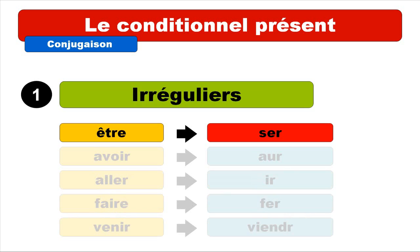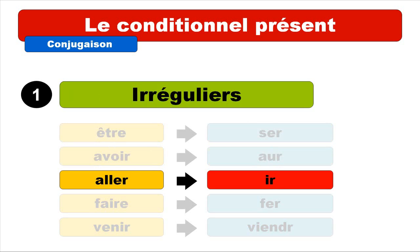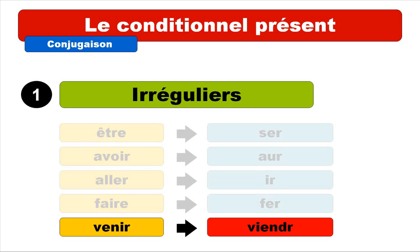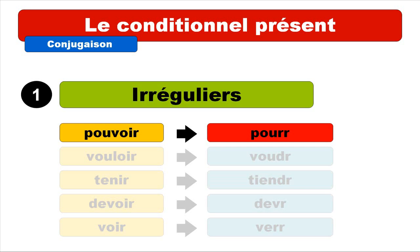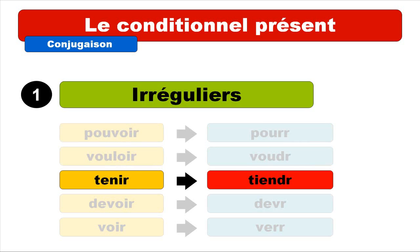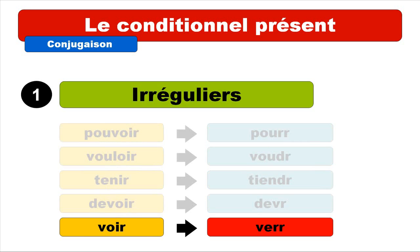We've got a few exceptions — a few irregular verbs. Like être, so you will get ser. Avoir: aur. Aller: ir. Faire: fer. Venir: viendr. Pouvoir: pourr. Vouloir: voudr. Tenir: tiendr. Devoir: devr. Voir: verr.